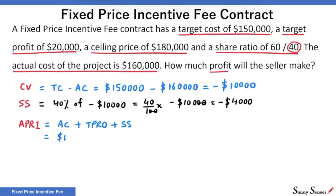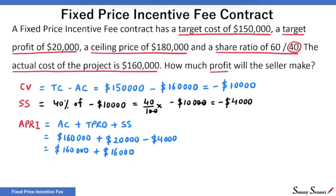Actual cost is $160,000. Target profit is $20,000, which is adjusted by minus $4,000 — profit has been reduced by $4,000. So actual price is $160,000 plus $16,000, or $176,000. We have to compare this with the selling price. $176,000 is less than $180,000, so we are definitely to the left of the PTA — the Point of Total Assumption from the introductory video on FPIF contracts. $176,000 is our actual price.